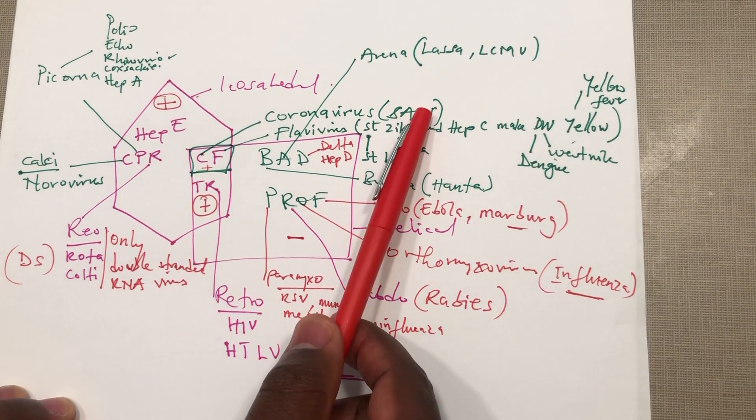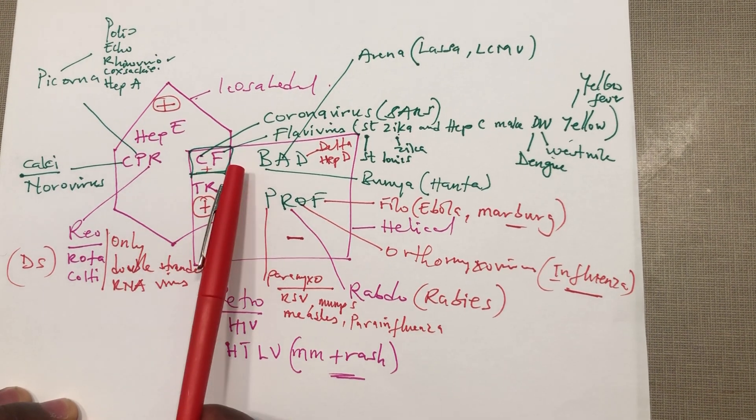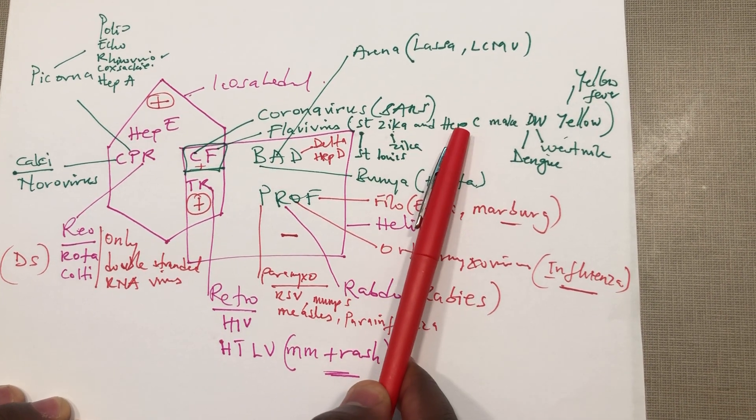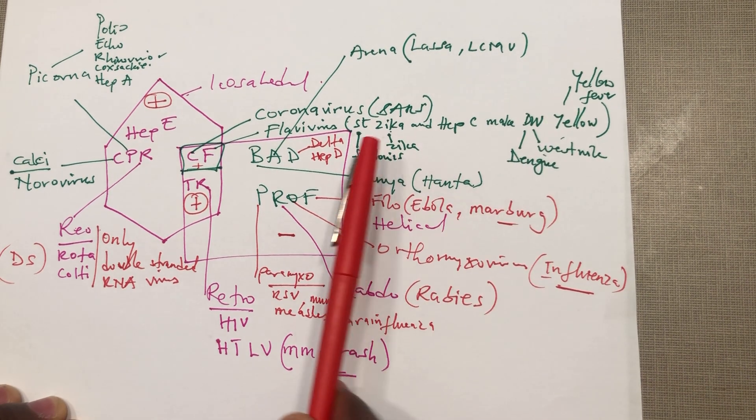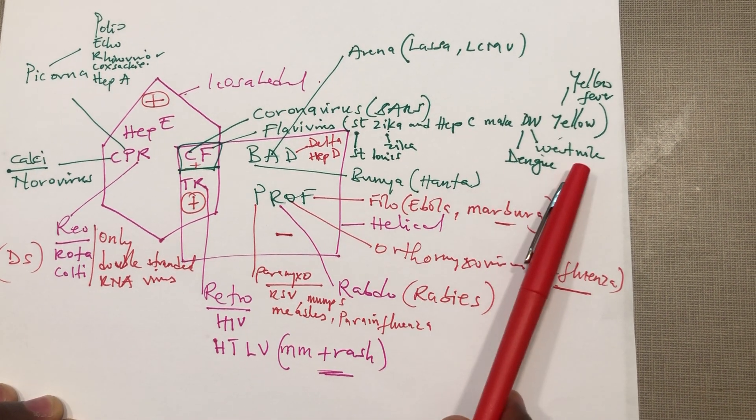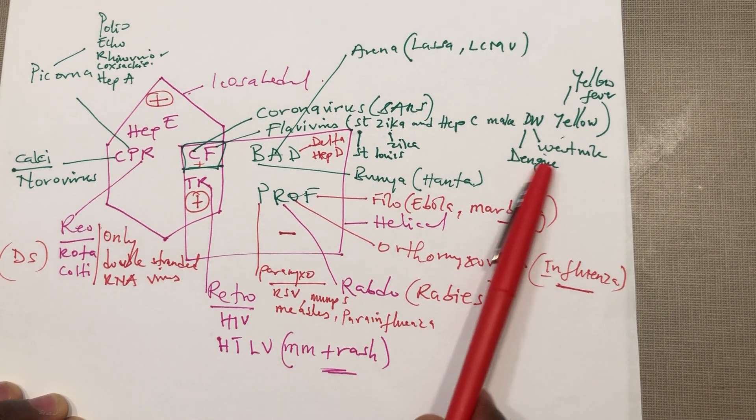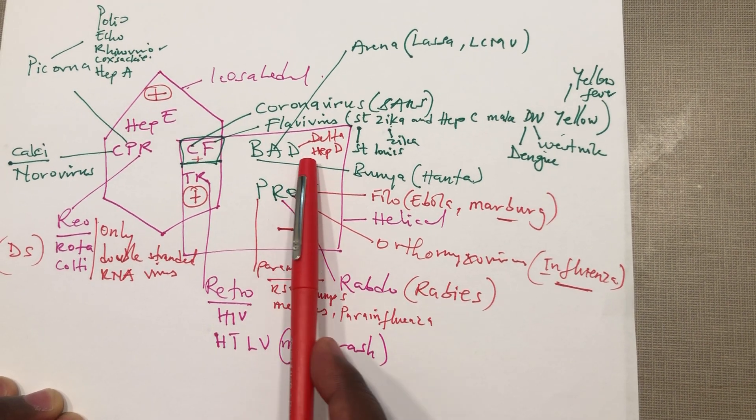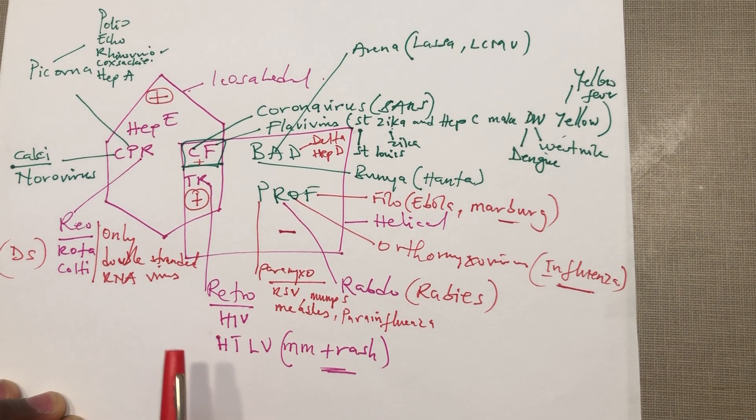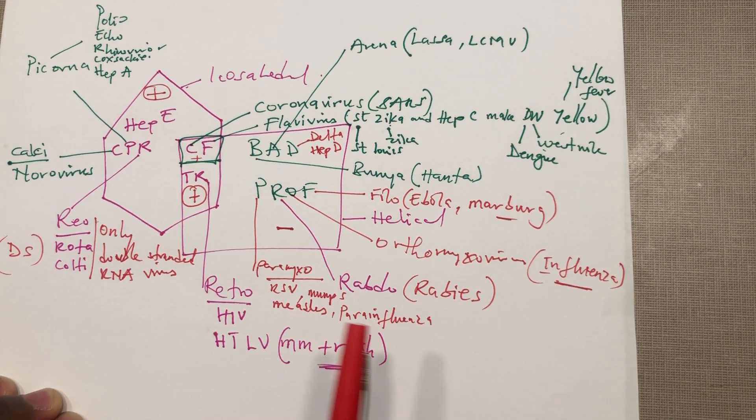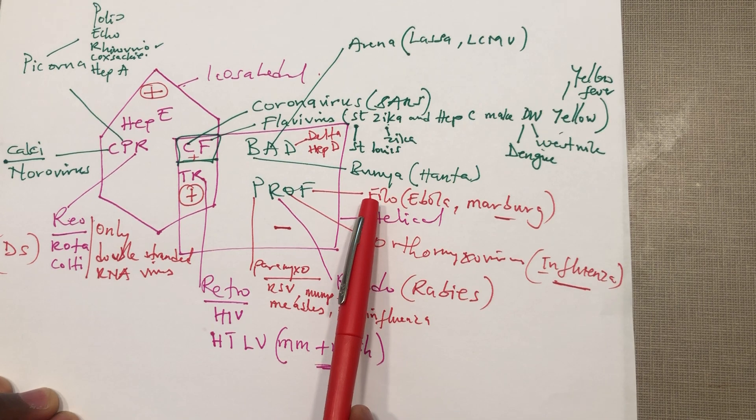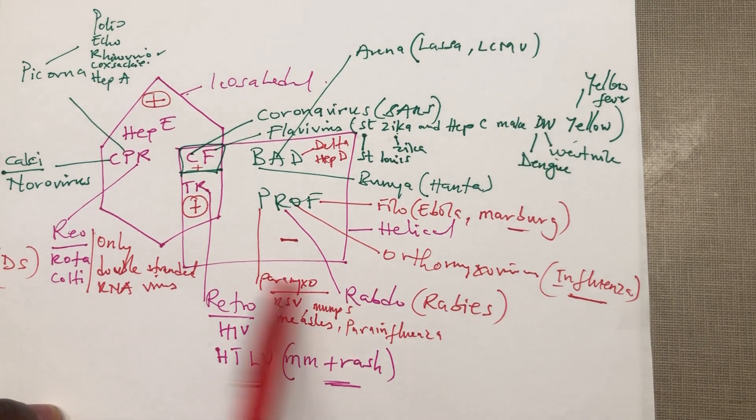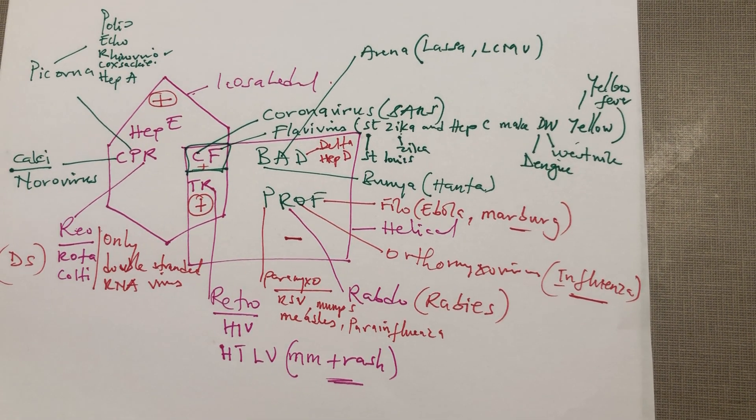Next one is the coronavirus which is causing the SARS influenza. We also have the filovirus. Saint Zika and hep C make DW yellow, so we have the Saint Louis, Zika virus, hep C, West Nile, dengue, and yellow fever. We talked about the arena which is the Lassa, delta which is hep D, paramyxo with RSV mumps measles parainfluenza, the filoviruses, Ebola, orthomyxo influenza. So pretty much we've touched on all of them.